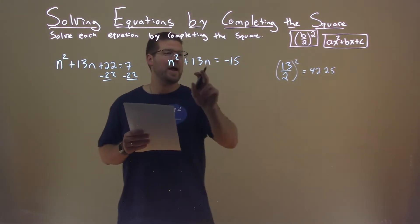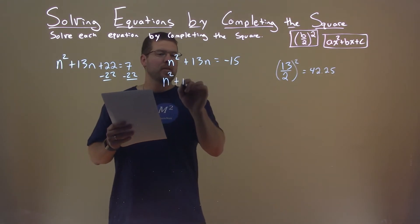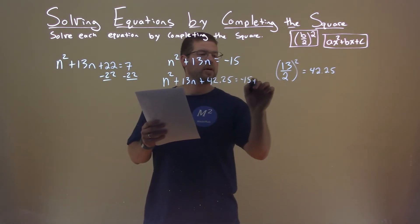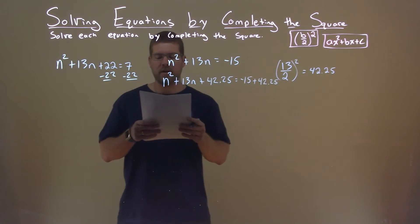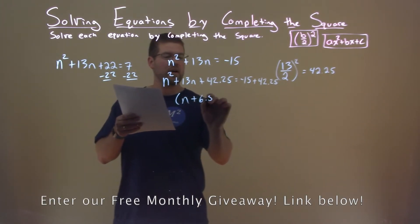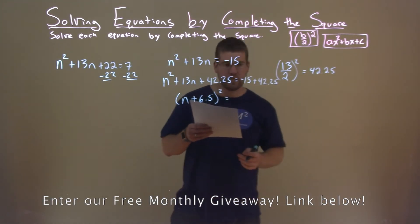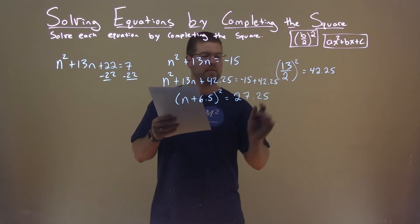I'm going to take that value and add it to both sides of the equation. n squared plus 13n plus 42.25 equals negative 15 plus 42.25. Left-hand side is a perfect square. That's n plus 6.5 all squared. Negative 15 plus 42.25 is 27.25.